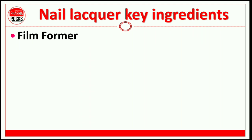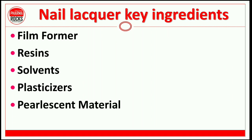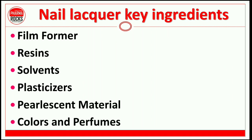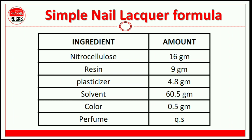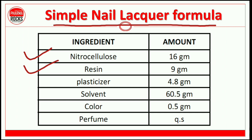What are the ingredients which are used? The first key ingredient is a film former, second is a resin, third is solvents, fourth is plasticizers, fifth is pearlescent material, and sixth is colors and perfume. These are the main key ingredients: film former is especially important to add, then resins, solvents, plasticizers, pearlescent material, colors, and perfume. In a simple nail lacquer formula, you use nitrocellulose as a film former, then resin material, plasticizers, solvent, color, and perfume. Color and perfume are added in a minor amount — quantity sufficient (QS).